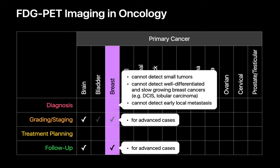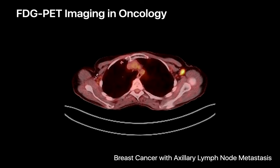FDG PET-CT is also of limited value for the diagnosis of breast cancer, as it tends to be tough to spot many breast cancers and also early metastatic breast cancer. In advanced breast cancer cases, however, FDG PET-CT may sometimes be used for staging and for assessing treatment responses, such as in a case of breast cancer with axillary nodal metastases.